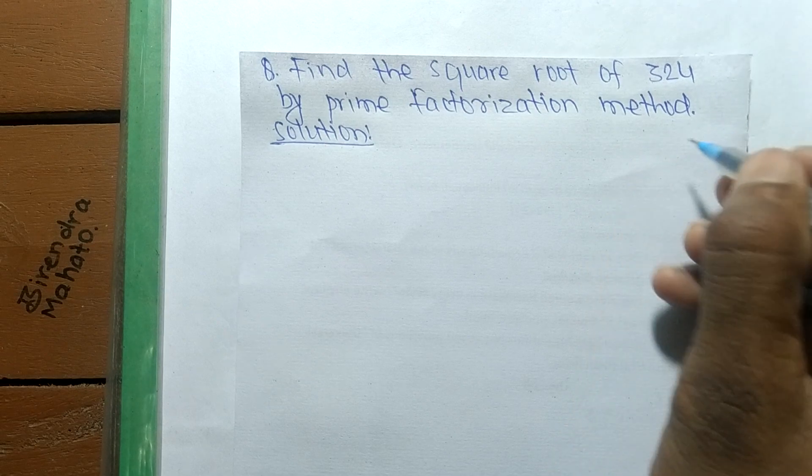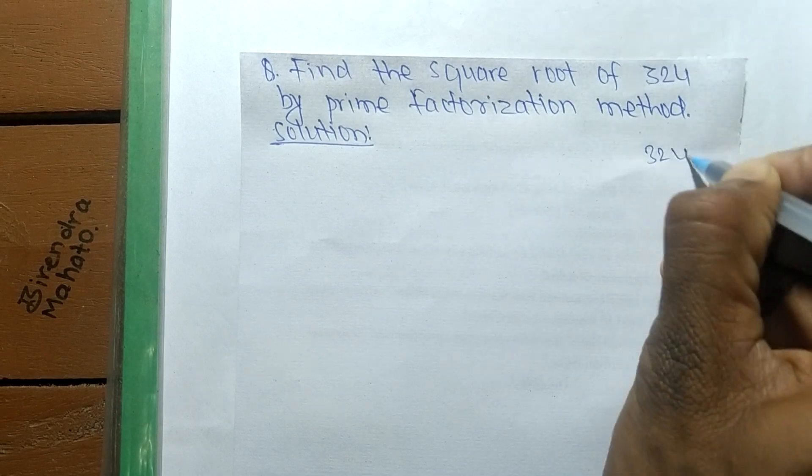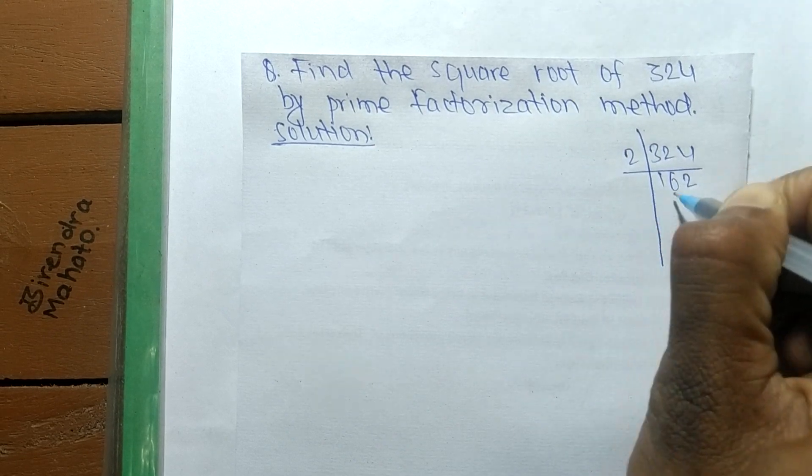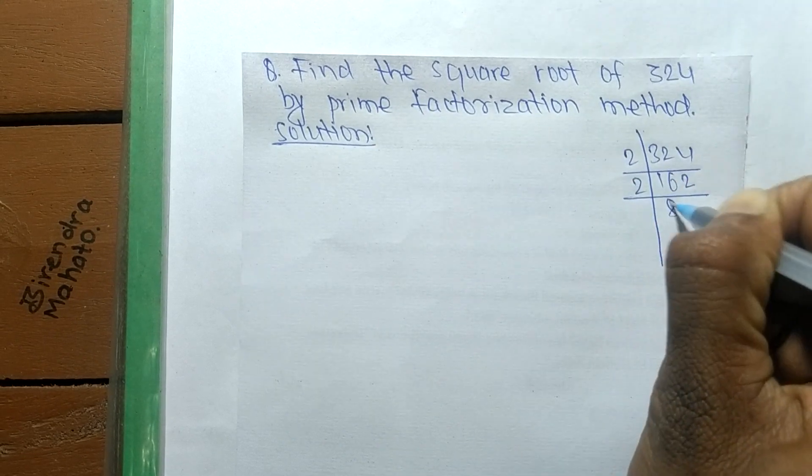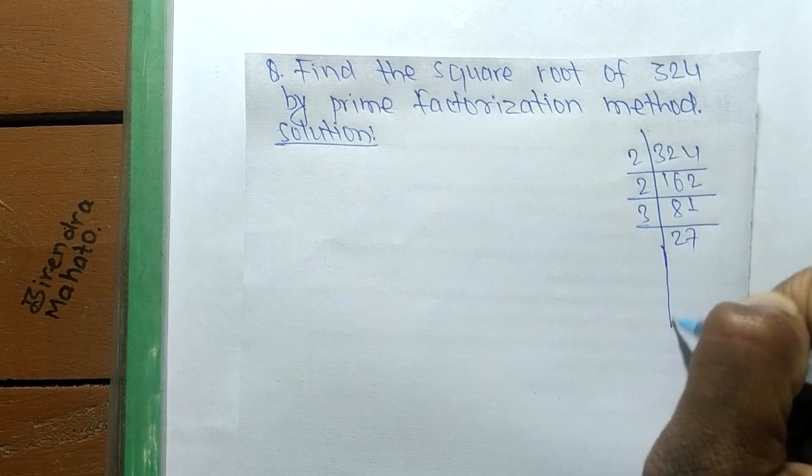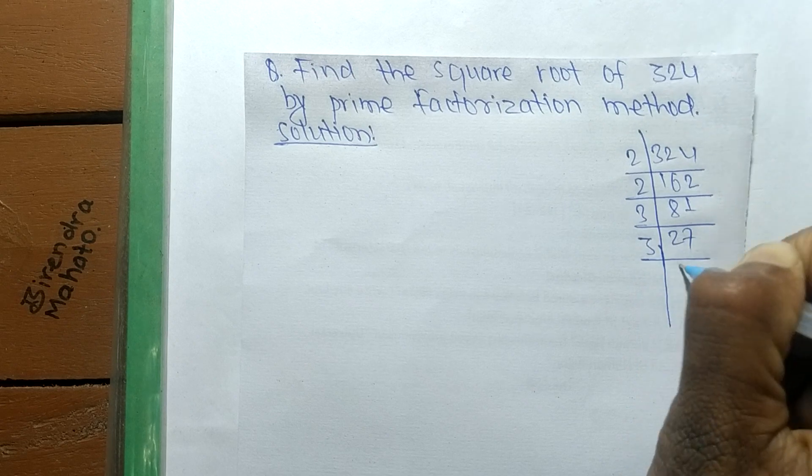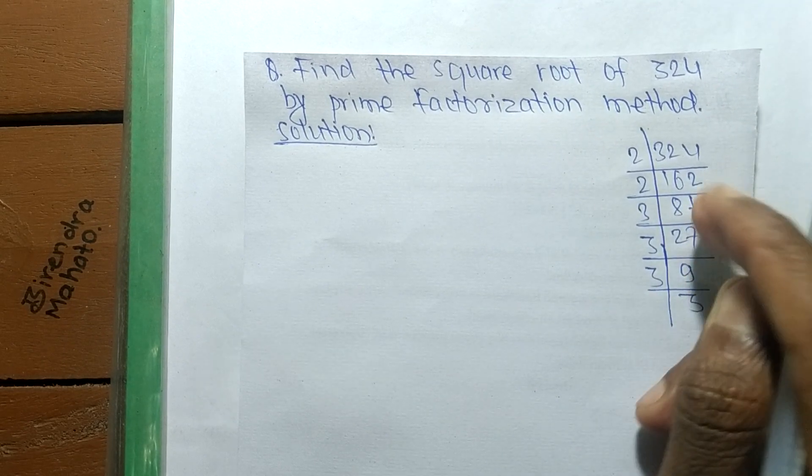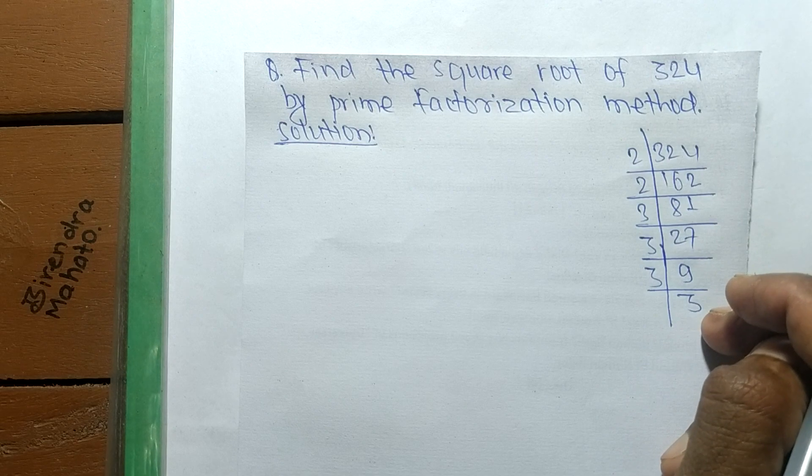First, we find the prime factors of 324. It is 162 and 2. Then 2, 81 divided by 3 is 27, 27 divided by 3 is 9, and 9 divided by 3 times 3. After finding the prime factors,